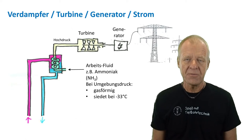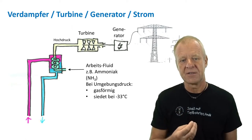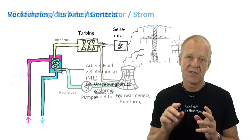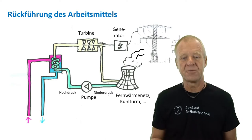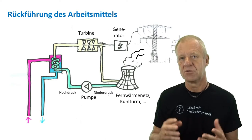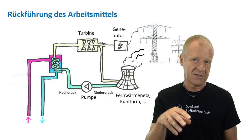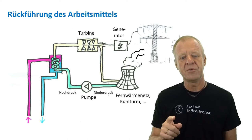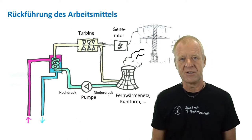The ammonia loses a significant part of its pressure in the turbine, but it is still in a gaseous phase. Therefore we need to cool the vapor down, for example in a cooling tower, where water is evaporated until the ammonia is changed back to its fluid phase. A pump is then used to bring the ammonia back to a high pressure level so that it can start the next cycle, beginning in the heat exchanger again.